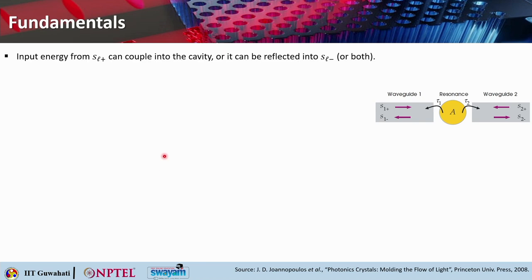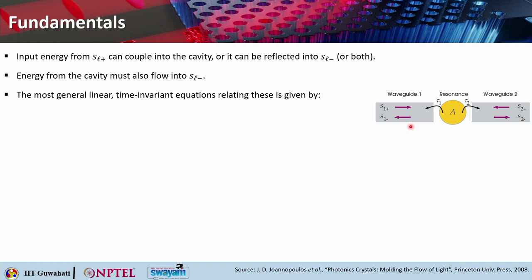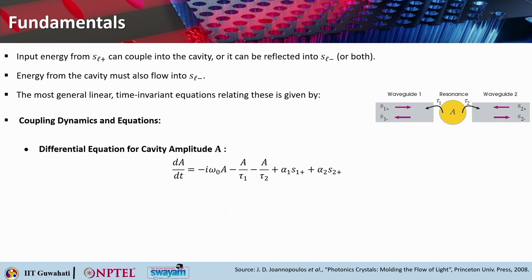When we include the waveguides, input energy S_L+ can couple into the cavity, or it can be reflected into S_L−, or both. The energy from the cavity must flow into S_L−. The most general linear time-invariant coupling dynamics equation is: dA/dt = −i*omega_0*A − A/tau_1 − A/tau_2 + alpha_1*S1+ + alpha_2*S2+. And the relation for waveguide modes is: S_L− = beta_L * S_L+ + gamma_L * A, where A is the amplitude of the cavity mode and L is 1 or 2.